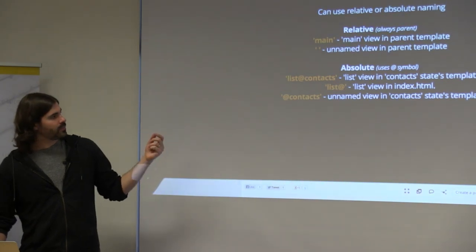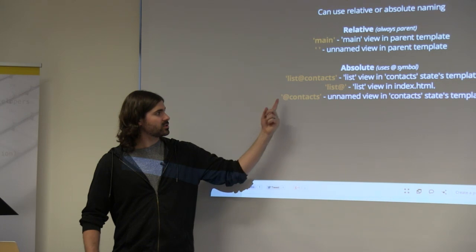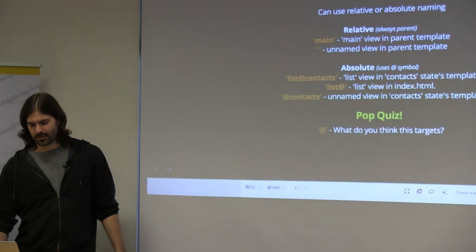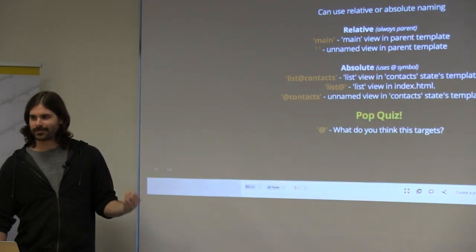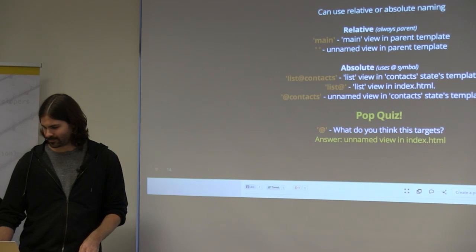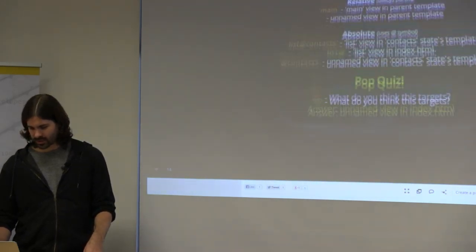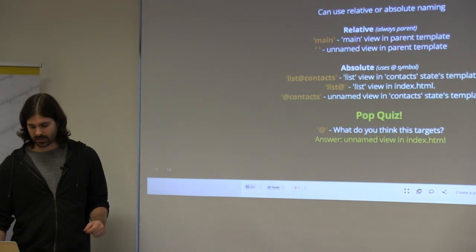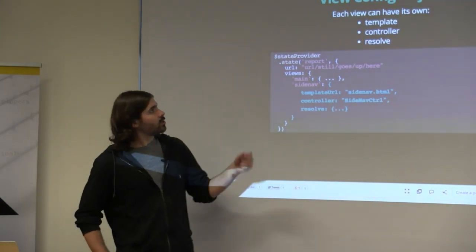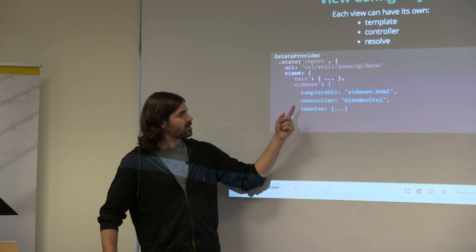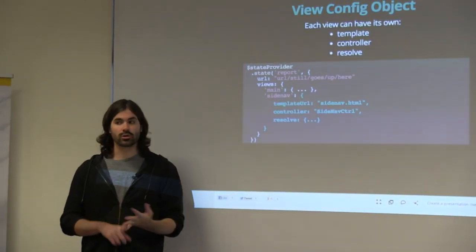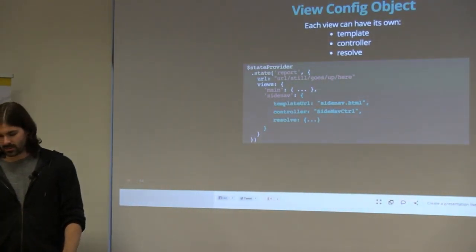The pop quiz answer: just an at symbol alone targets the unnamed view in index.html. Now that you know how to target views, the config object lets you set a template (or templateURL or templateProvider), a controller (or controllerProvider), and a resolve. Another use case: a website with filters up top — when you set those filters, you want to populate a table and a graph. A potential anti-pattern is immediately splitting everything into its own named ui-view.